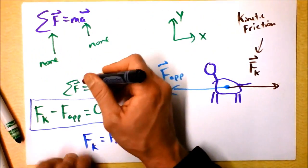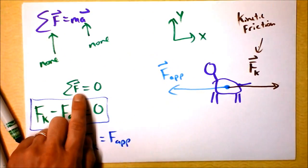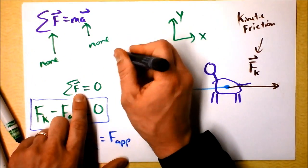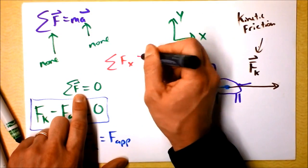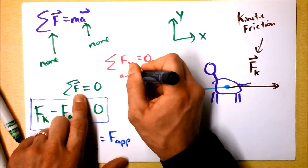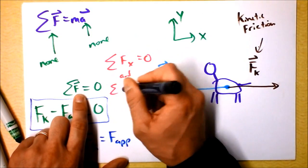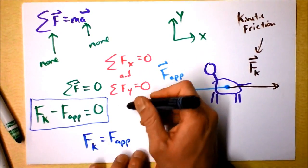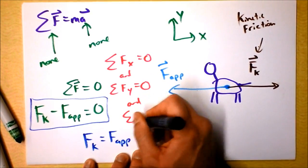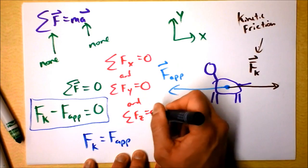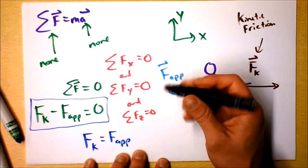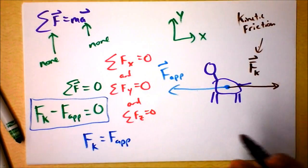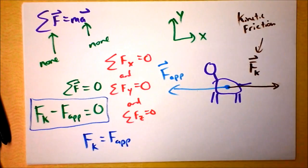This equation that says net force equals zero is actually two equations: it says net force in the x direction equals zero, and net force in the y direction equals zero. And in principle it also says net force in the z direction equals zero, but give me a situation in first-year physics where there are three distinct dimensions of forces — I'll be pretty impressed.